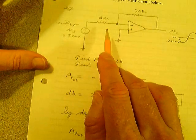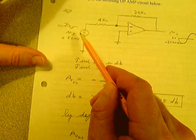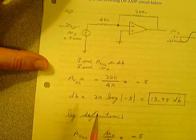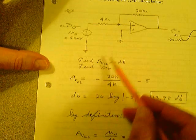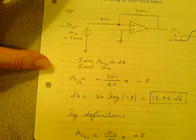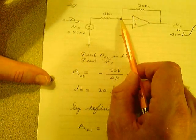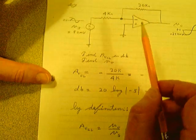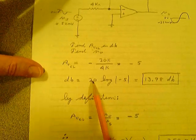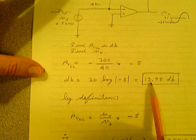Let's analyze the operational amplifier below. Right away, recognize it as an inverting amplifier configuration because the 50-millivolt peak signal feeds into the inverting input. We need to find the closed-loop voltage gain and gain in dB. The gain is minus 20K over 4K, which is minus 5 by inspection. In dB: 20 times log of the absolute value of minus 5 equals 13.98 decibels.